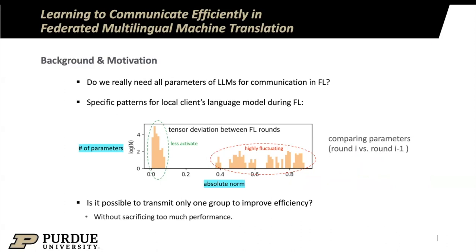We found that if we compare a trained client's model with its previous round, we can see the deviation of the models tends to be clustered in two groups, and it seems like a clear boundary between these two clusters. So our goal is to analyze whether communicating one group of parameters in local models is enough — for example, just sending the less active parameters or just sending the fluctuating parameters during federated learning.